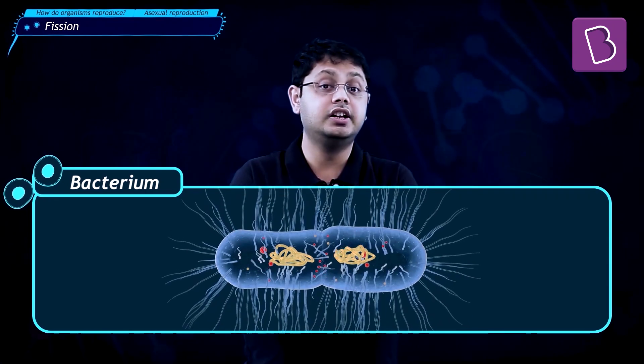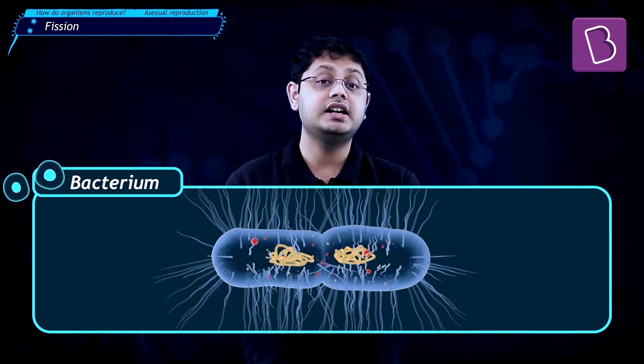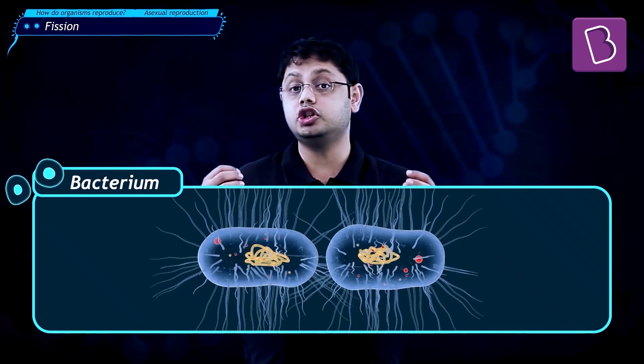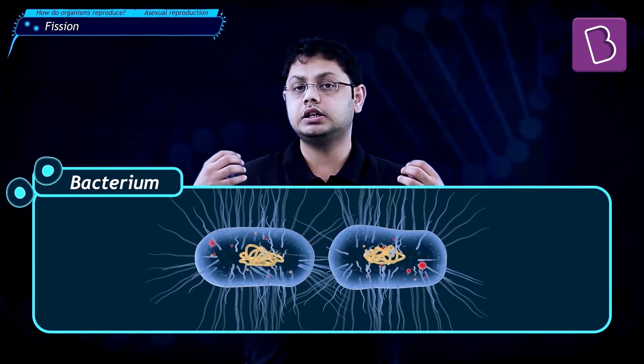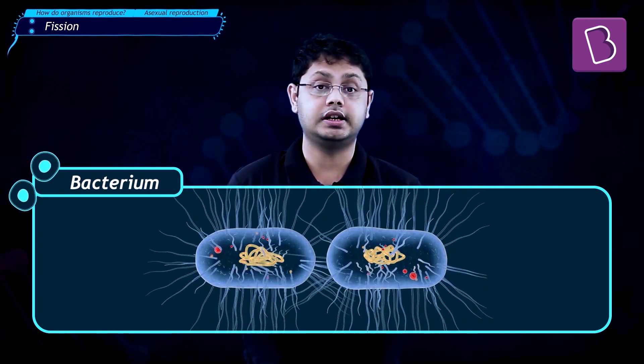The process happens such that the division splits only the cytoplasm and does not damage the DNA. As the division occurs, the cytoplasm is cleaved into two parts, creating two daughter cells.